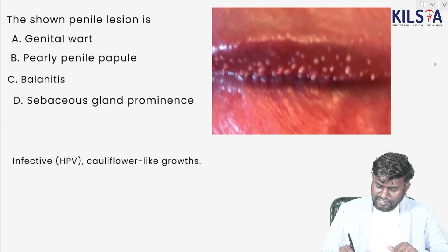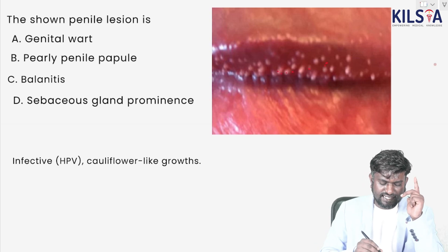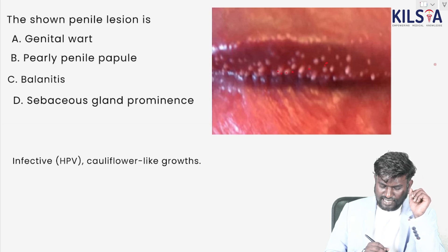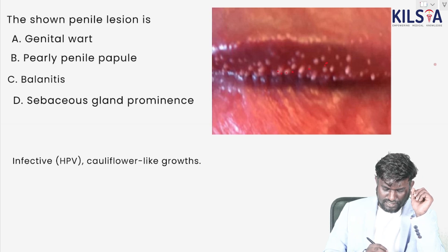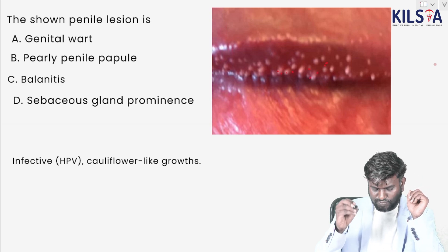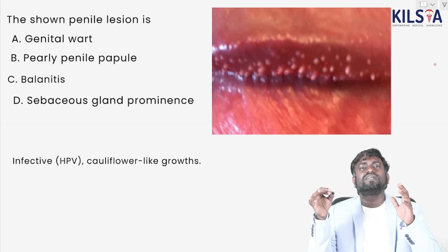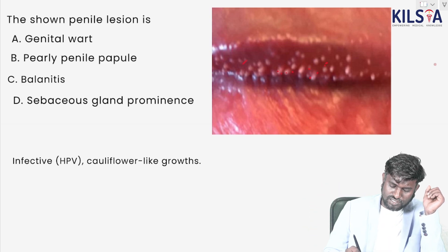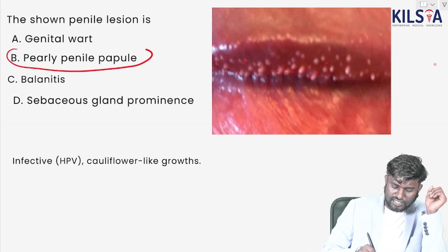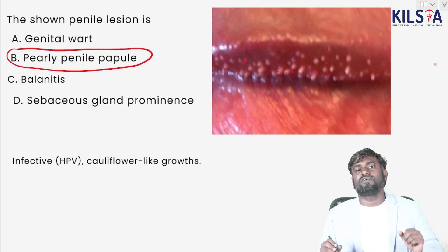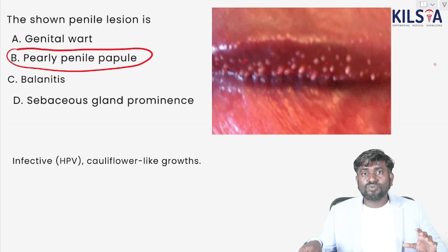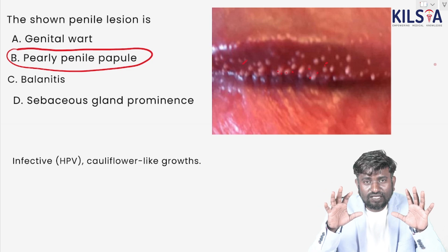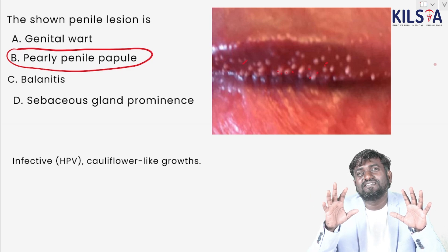Looking at a penile lesion — the options are genital wart, early penile papillary carcinoma, or sebaceous gland prominence. The lesion is related to HPV infection and can also show cauliflower-like growth. The answer is early penile carcinoma.